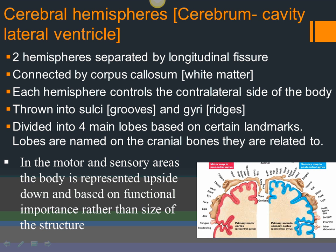The surface of the cerebral hemisphere is thrown into a lot of grooves known as sulci. In between those grooves you have raised tissue known as a gyrus — like a ridge. Singular is gyrus, plural is gyri. The cerebral hemispheres are also divided into four main lobes. Some books give a fifth lobe known as the insula, which is hidden, but otherwise the four main lobes are named based on the cranial bones they relate to.